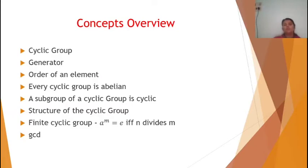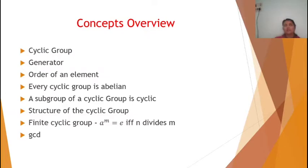We already covered four theorems: first, every cyclic group is abelian; second, a subgroup of a cyclic group is cyclic; third, every infinite cyclic group is isomorphic to Z under addition, and a finite cyclic group is isomorphic to Z_n under addition modulo n. Fourth, if G is a finite cyclic group of order n, then a raised to m equals e if and only if n divides m. We also covered the concept of GCD.